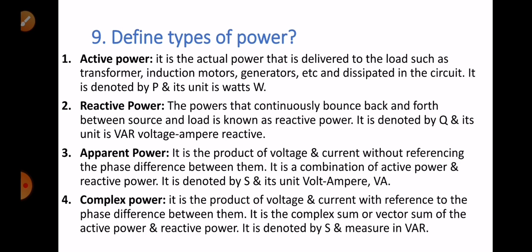Question number nine: define the types of power. There are four types. Number one: active power — it is the actual power delivered to the load such as transformers, induction motors, and generators. It is denoted by P and its unit is watt. Number two: reactive power — the power that continuously bounces back and forth between source and load. It is denoted by Q and its unit is VAR (volt ampere reactive).